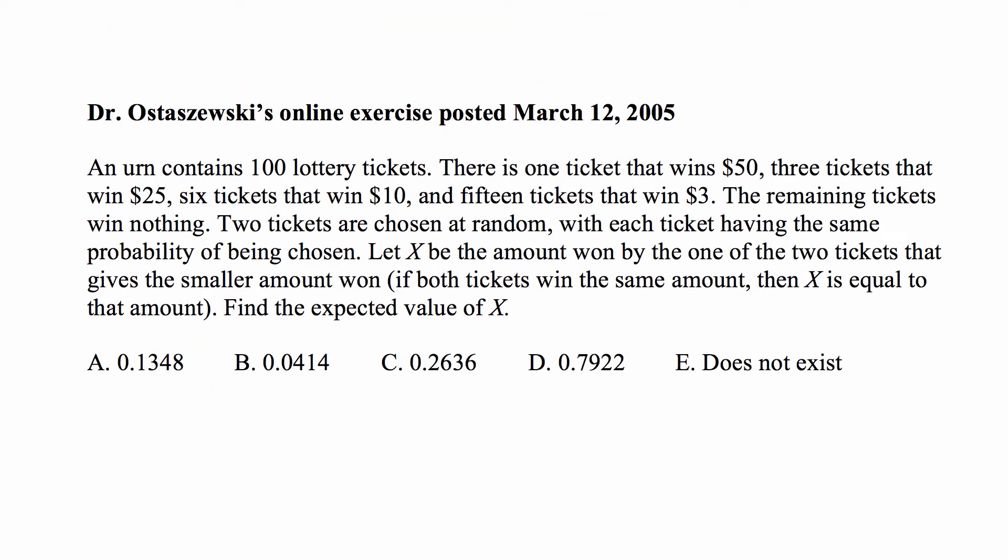This is an exercise I posted in March 2005. The story is as follows. An urn contains 100 lottery tickets. There is one ticket that wins $50, three tickets that win $25, six tickets that win $10, and 15 tickets that win $3. The remaining tickets win nothing.